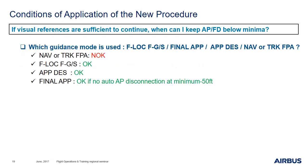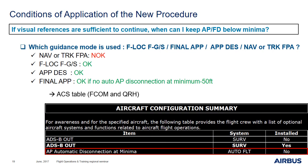Let's review the conditions in detail. The first point is which guidance mode is used for the approach. The available guidance modes are F-LOC/F-GS, final APP, APP DES, and NAV or track FPA. If you use NAV or track FPA guidance, you cannot use this procedure. For F-LOC/F-GS — you can. APP DES — you can. Final APP — you can use it if there is no automatic AP disconnection at minimum minus 50 feet. To identify whether your aircraft has the automatic AP disconnection at minimum minus 50 feet, refer to the aircraft configuration summary table in the FCOM and QRH. Look for the item 'AP automatic disconnection at minimum: No,' meaning the AP will remain engaged below minimum minus 50 feet.